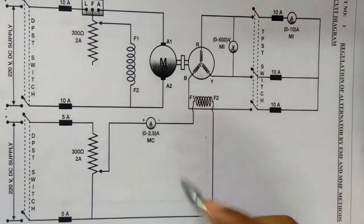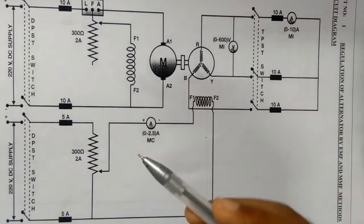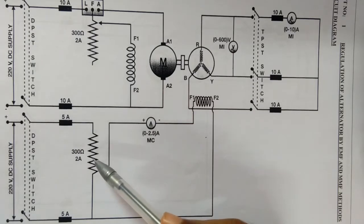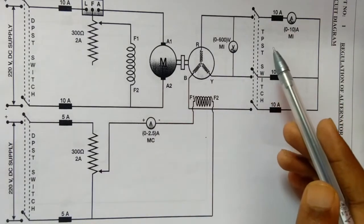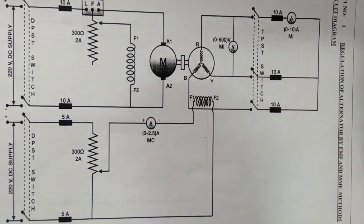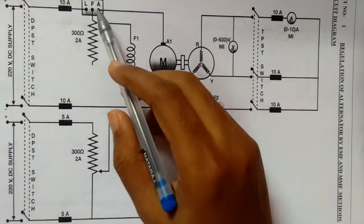This is a circuit diagram for this experiment. The procedure will be keeping the Rheostat in the minimum position. And with TPSC, this 3-phase switch opens the motor supply. And then the motor is started using the 3-point starter.